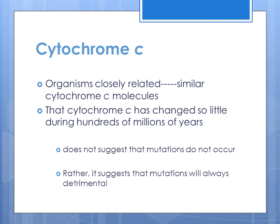Research shows that organisms which are closely related have similar cytochrome C molecules. The amino acid sequence of cytochrome C is very similar between two species that are closely related to each other.